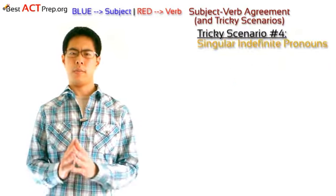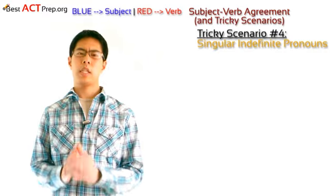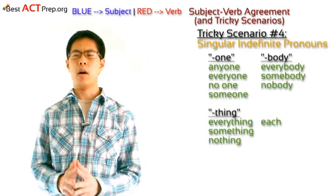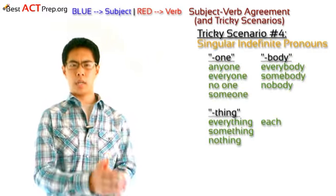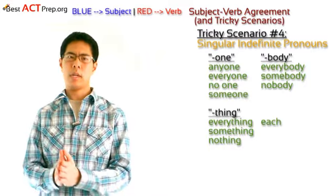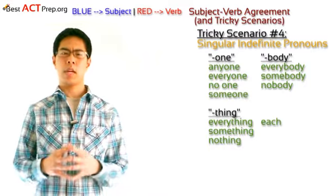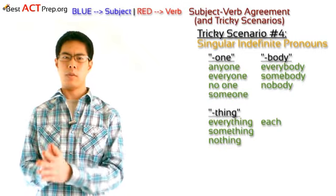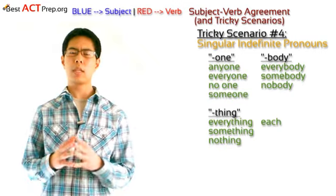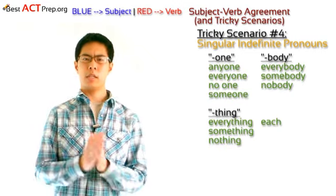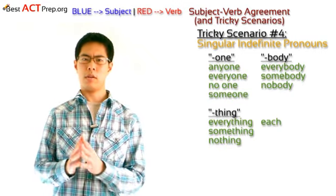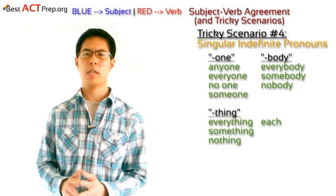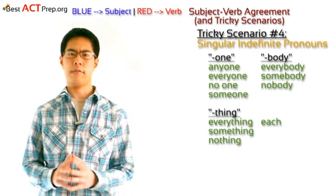Tricky scenario number four: singular indefinite pronouns. Indefinite pronouns that end in 'one,' such as anyone, everyone, no one, and someone; that end in 'body,' such as everybody, somebody, and nobody; and 'thing,' such as everything, something, and nothing; as well as the word 'each' — are singular and always take singular verbs.